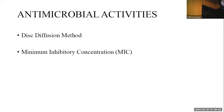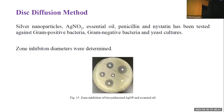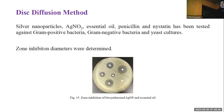Antimicrobial activity was assessed using disk diffusion and minimum inhibitory concentration methods. Antimicrobial activity was determined by the disk diffusion method. Silver nanoparticles, silver nitrate solution, essential oil, and standard antibiotics — penicillin and nystatin — were tested against gram-positive bacteria, gram-negative bacteria, and yeast cultures. Samples were prepared, plates were incubated, and zone inhibition diameters were determined.